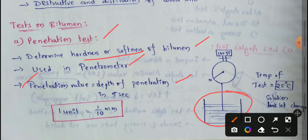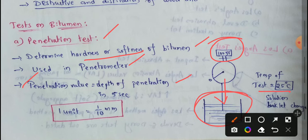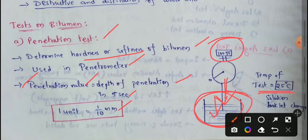In the penetration test, we give bitumen to the specimen. We take a bitumen sample of 100 grams, and the test temperature is 25 degrees — we choose this standard temperature. Using a penetrometer, we penetrate the bitumen for 5 seconds and get the penetration value. The penetration value is measured in 0.1 mm units, where 1 unit equals 1/10 mm, which equals 0.1 mm.